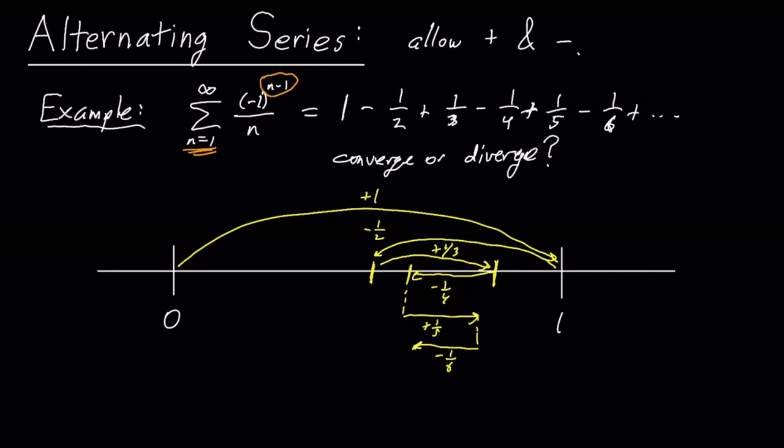So, you know, we end up, it ends up sort of going back and forth. And basically you're settling on some value that maybe, let's just say is about right there. And so this actually pretty clearly converges, converges to some value.